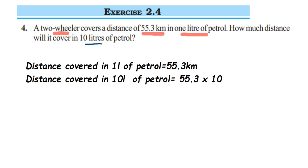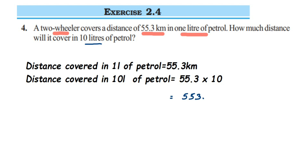Now, when multiplying a decimal number by 10 — as covered in the third question of this exercise — there's a simple trick. Since 10 has only one zero, you move the decimal point one place to the right. So 55.3 multiplied by 10 becomes 553.0 kilometers.